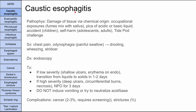Next is caustic esophagitis. The pathophysiology is tissue damage via chemical origin — something entered the esophagus from the top that was caustic and caused damage. This can come from occupational fume exposures, pica, or ingestion of acidic or basic liquids — like the Tide Pod Challenge. It can also happen in accidents involving children who drink laundry detergent, or in self-harm situations like someone drinking Drano in a suicide attempt.